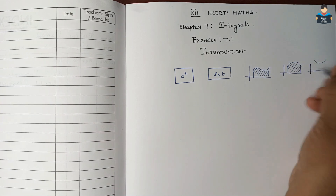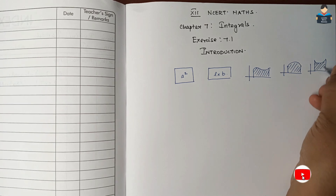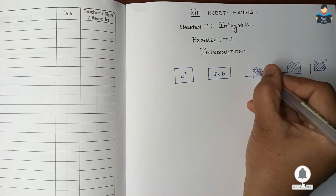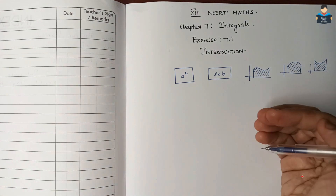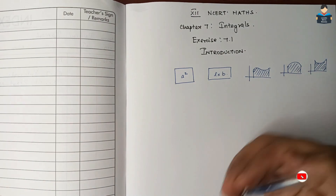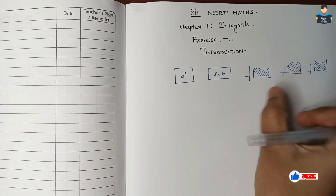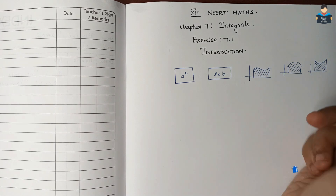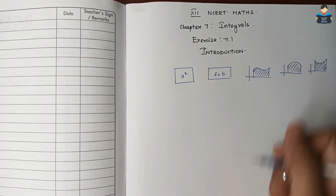To find the area under the curve, we divide the region into small divisions. This is a very, very long process. So, to handle this, we will use integration.